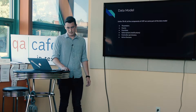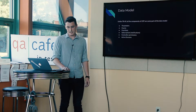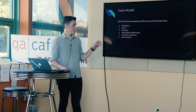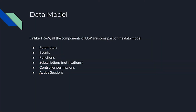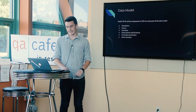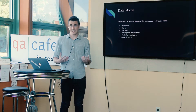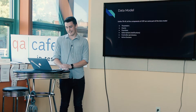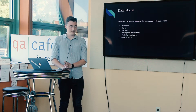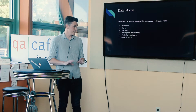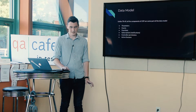Another key difference between TR69 and USP is that in USP, everything is part of the data model. In TR69 you can set up notifications as a sort of background process. But in USP you actually create a subscription, which is an object in the data model. There are also functions in the data model that you can call through Operate messages, and when something happens on an agent it sends you a Notify message. Everything you can do with an agent is really part of the data model.